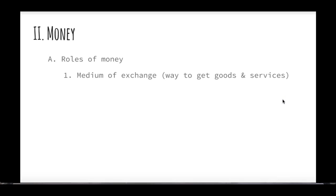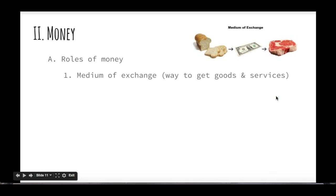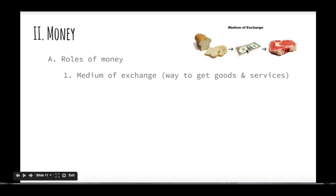Money as a whole has to fit three roles in order for it to actually function as money. First, it has to have a medium of exchange — in other words, it has to be a way to get goods and services. For example, I make bread, I sell my bread, I get money, which I can then use to buy a large piece of meat. This piece of paper — actually made out of cotton and linen — can be used to pay me for selling my bread and to get other things. We all agree that it works, so it functions as money.